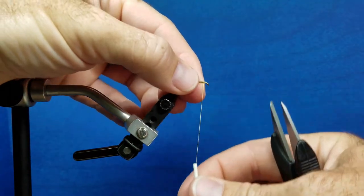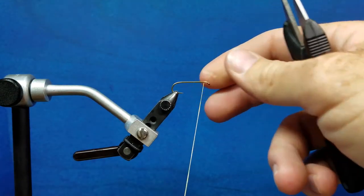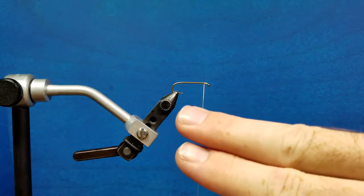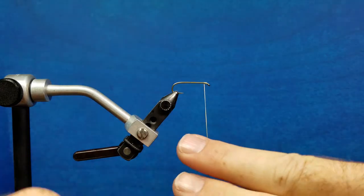If this is something you want to try, I wanted to give some instruction to show you how it works. So when I go to whip finish a fly, once again, I'm a right-handed tier, so I have my middle finger and my index finger, I've pulled out some extra thread.